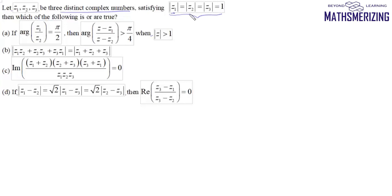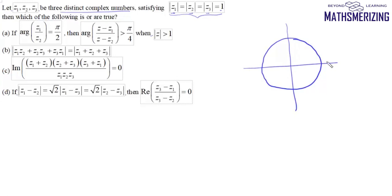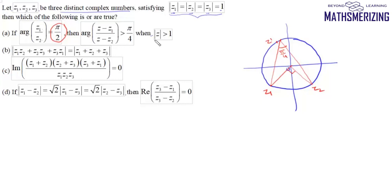Since mod Z1 equals mod Z2 equals mod Z3 equals one, Z1, Z2, and Z3 will lie on a unit circle centered at the origin. For this first option, we consider two points Z1 and Z2 such that the angle between Z1 and Z2 is π/2. We know that the angle in the segment is half the angle at the center, so if the central angle is 90°, the inscribed angle will be π/4.